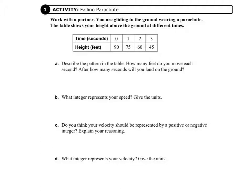We're going to move to Activity 1, which is a falling parachute. It says work with a partner — your partner is me for this activity. You are gliding to the ground wearing a parachute. The table shows your height above the ground at different times. In the first row is time, and in the second row is height in feet. At zero seconds, we are at a height of 90 feet.